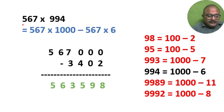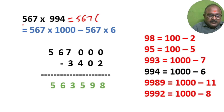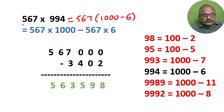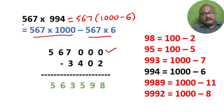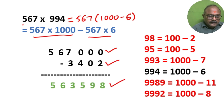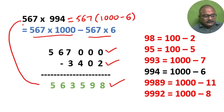567 multiplied by 994: this is equal to 567 multiplied by 1000 minus 6. So 567 into 1000 minus 567 into 6. If you subtract, we get the required answer: 567 into 994 is 563598.